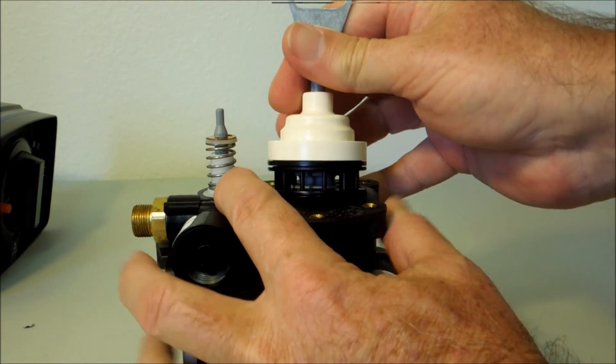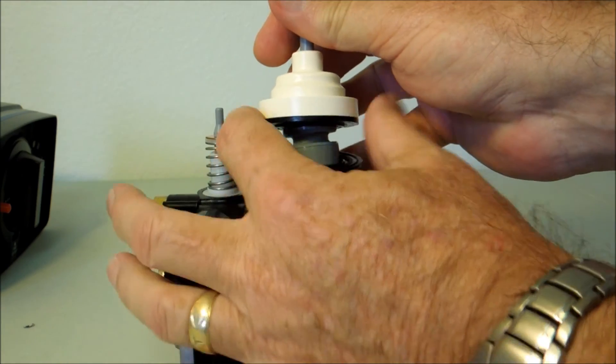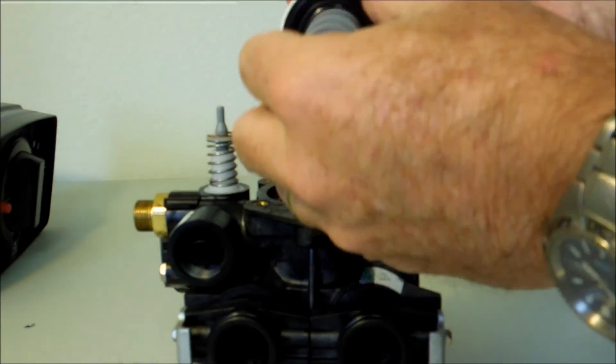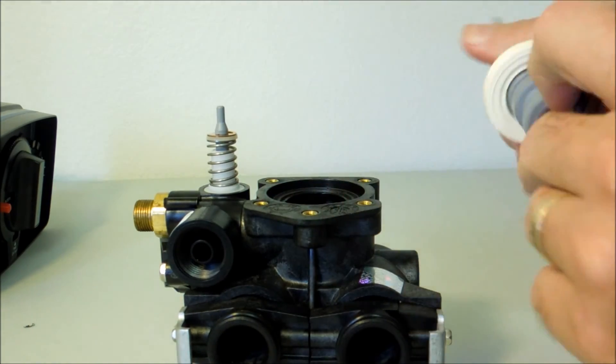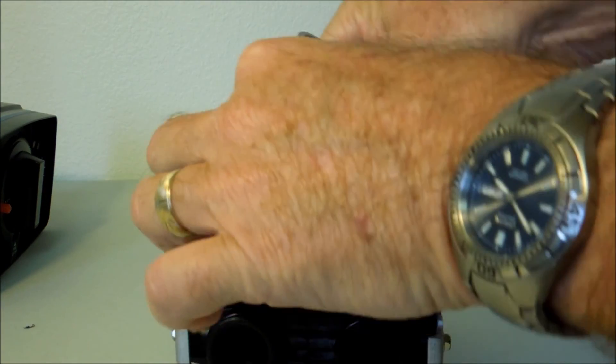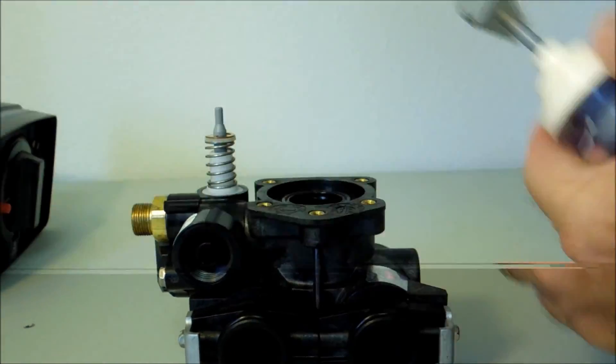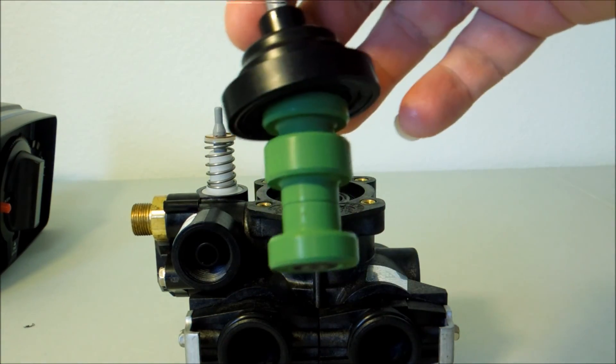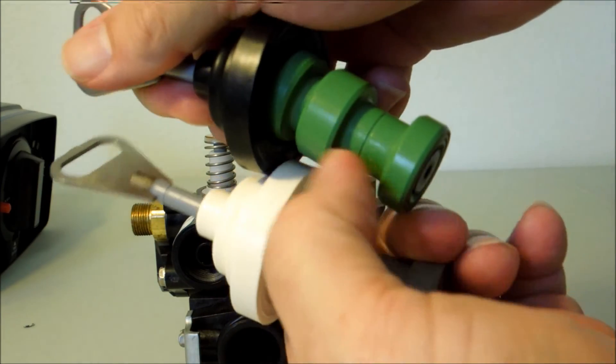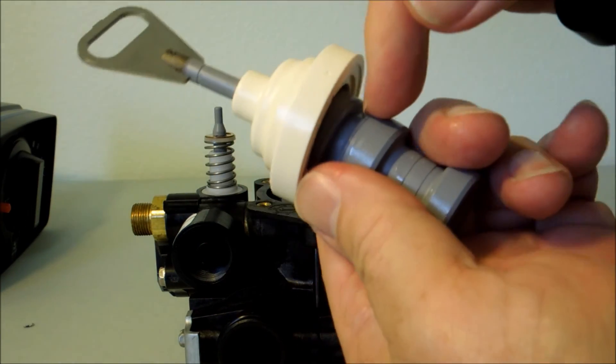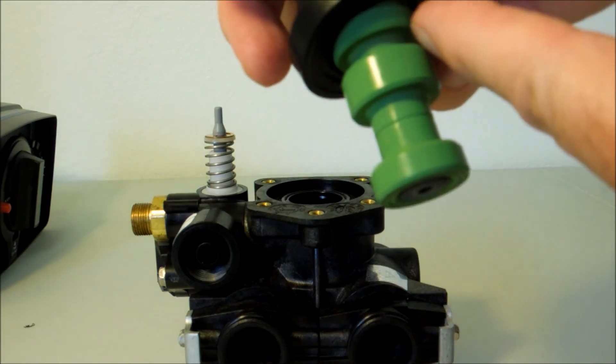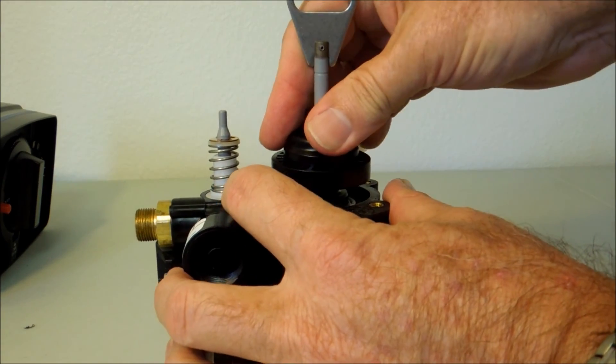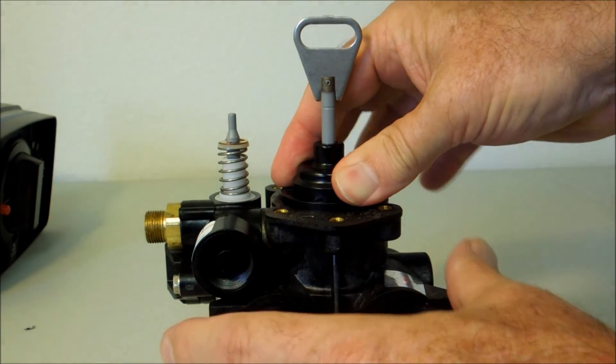Now I'm going to pull the main piston out. Seals and spacers are going to try and come up with it, but we're not changing those, so just push them right back down. In place of the softener piston, we're going to put the backwash piston. It gives a slightly longer backwash time than the softener piston.